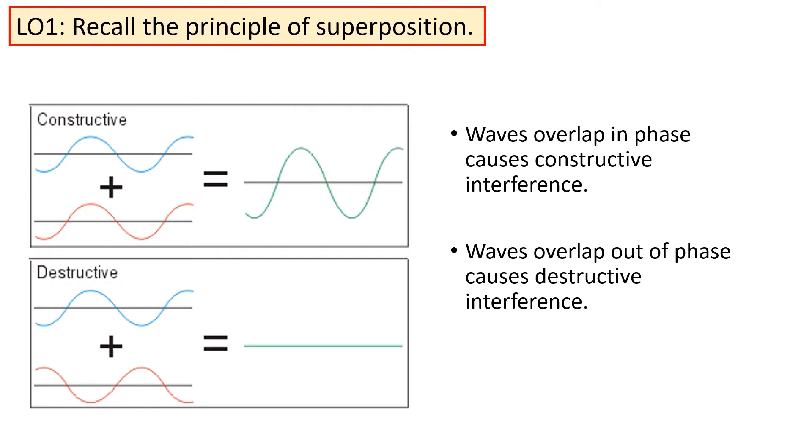For example, if we get constructive interference, that's because the two waves were overlapped in phase, whereas if the two waves were overlapped out of phase, we would have got destructive interference.